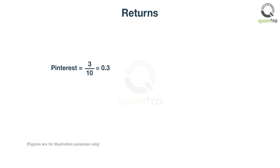As seen on screen, you would have made $0.3 on Pinterest, compared to $0.1 on Google. In other words, you would have made 30% returns in Pinterest, compared to 10% returns in Google.